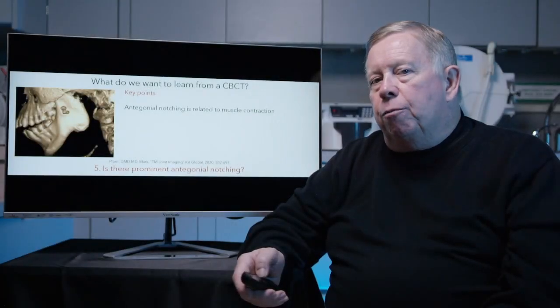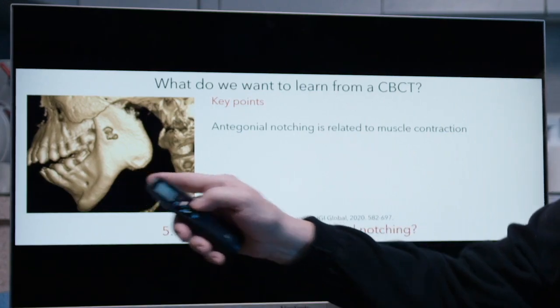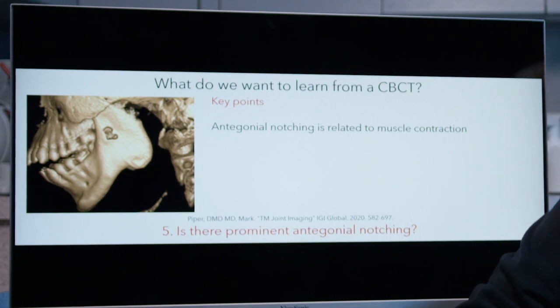The fifth thing we're going to look at is to look for prominent antegonial notching. When you look at that, I'm thinking about that in terms of muscle contraction.